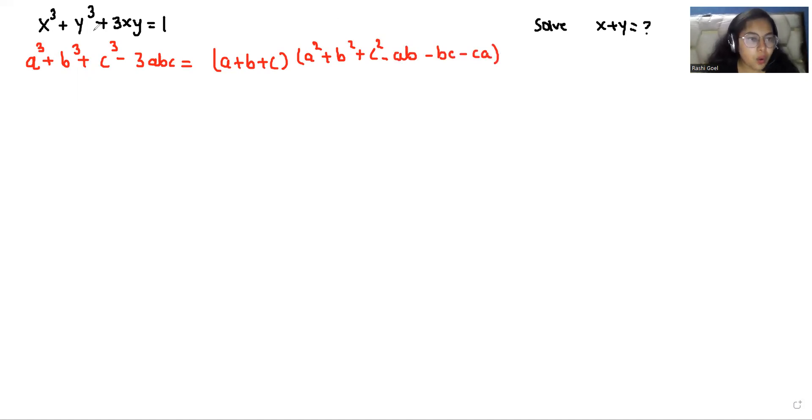Now I'll compare the given equation with this identity. Taking all terms together: x³ + y³ - 1 - 3xy. Comparing this equation, a = x, b = y, and c = -1.